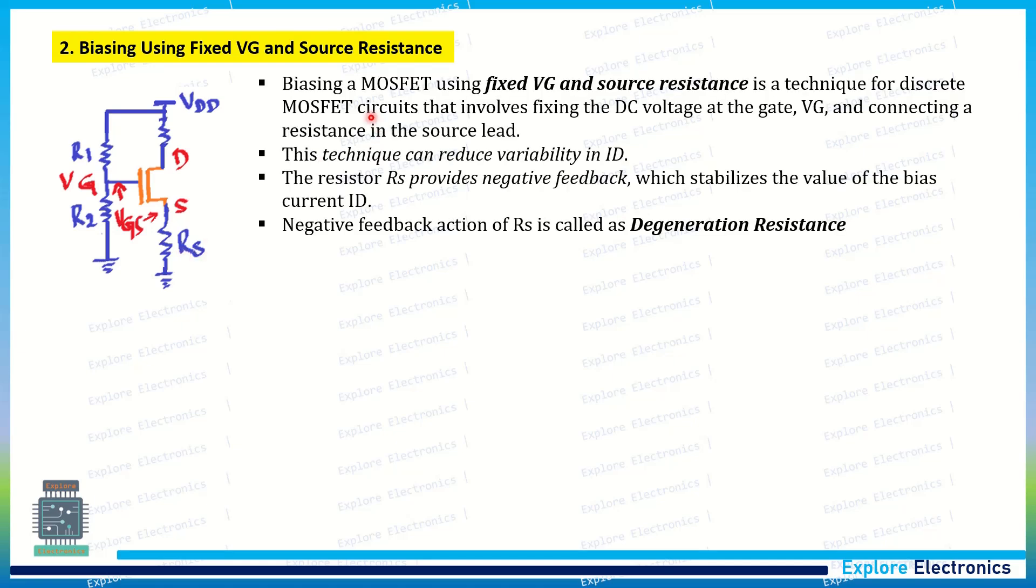This method is a biasing of MOSFET using fixed VG. It is not fixed VGS, it is just fixed VG, and VGS is not constant here. And source resistance is added. In this technique used in discrete MOSFET circuits, involved fixed DC voltage to the gate VG, connecting a resistance as I said. This technique will reduce the variability in ID. The previous problem we saw in fixed VGS will be reduced here. And here is the resistance RS. It will act as a negative feedback which stabilizes the biasing of the device. Means it will stabilize VGS plus ID.